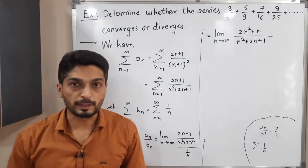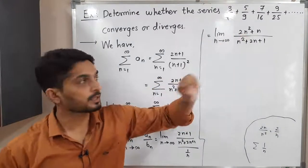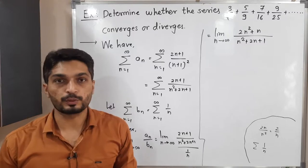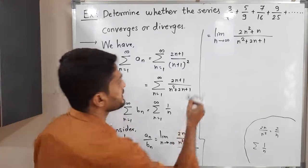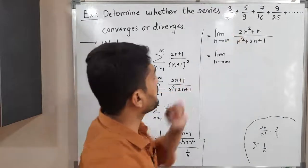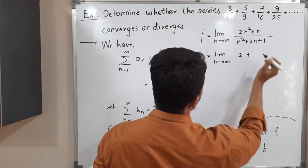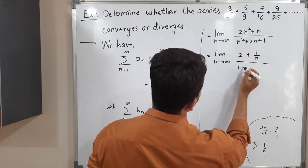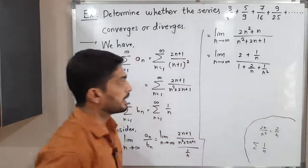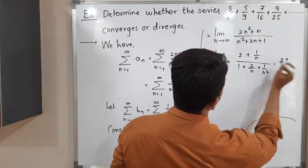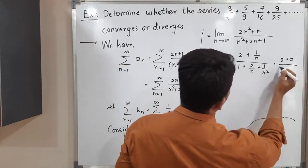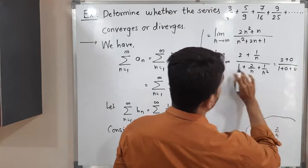The highest power in both numerator and denominator is n², so we divide numerator and denominator by n². This gives: limit as n→∞ of (2 + 1/n) / (1 + 2/n + 1/n²). Applying the limit, 1/n and 1/n² all tend to 0, leaving 2/1 = 2. So the limit equals 2, which is a positive finite real number.